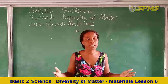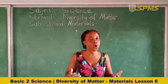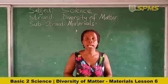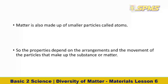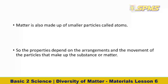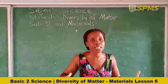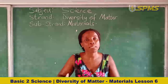All these states of matter have their unique physical properties, and that is why we are going to look at the properties of the states of matter. Matter is made up of small particles called atoms. Every matter has little small particles which are known as atoms. The properties depend on the arrangement and the movement of these particles. The properties will tell the arrangement of these particles that make up the substance of the matter — the arrangement of particles in a substance tells the kind of matter you are talking about.